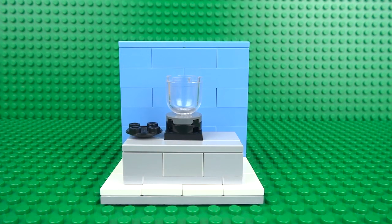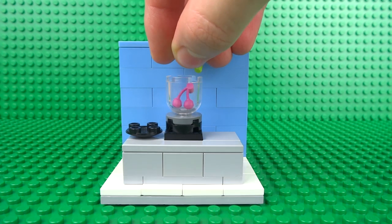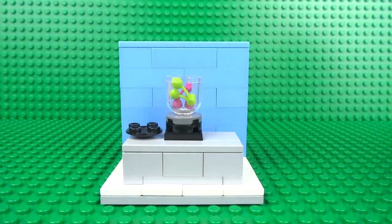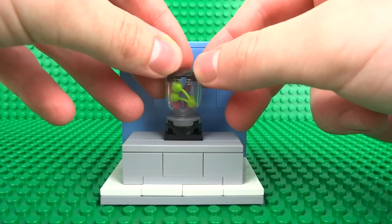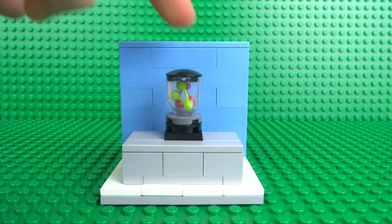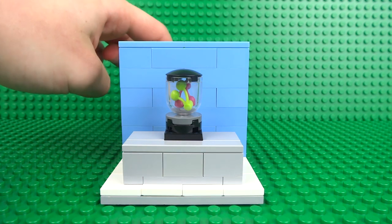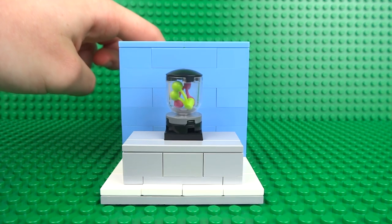So that we can insert the fruits that we want to blend. We'll be blending some cherries and some grapes to create a very interesting smoothie. Just place the lid back on and you can start blending with the press of a button.